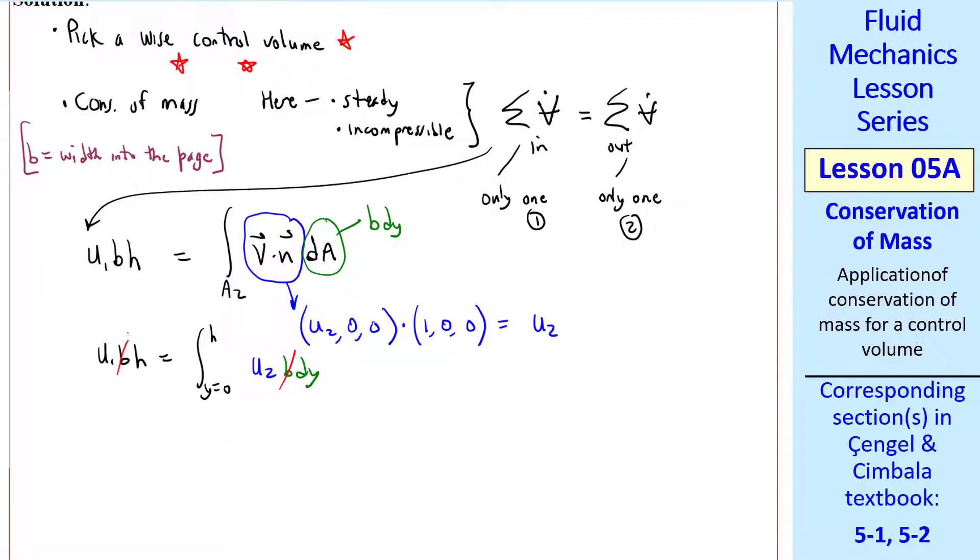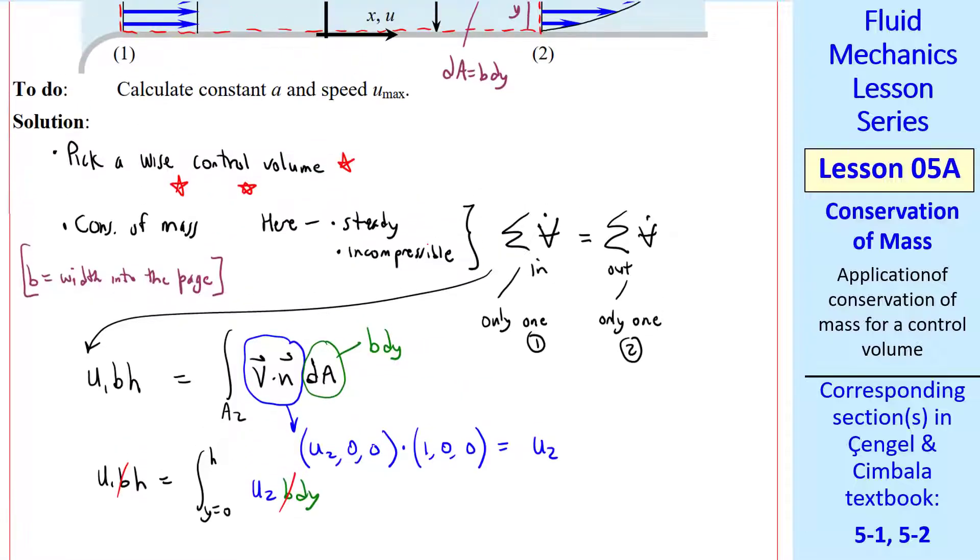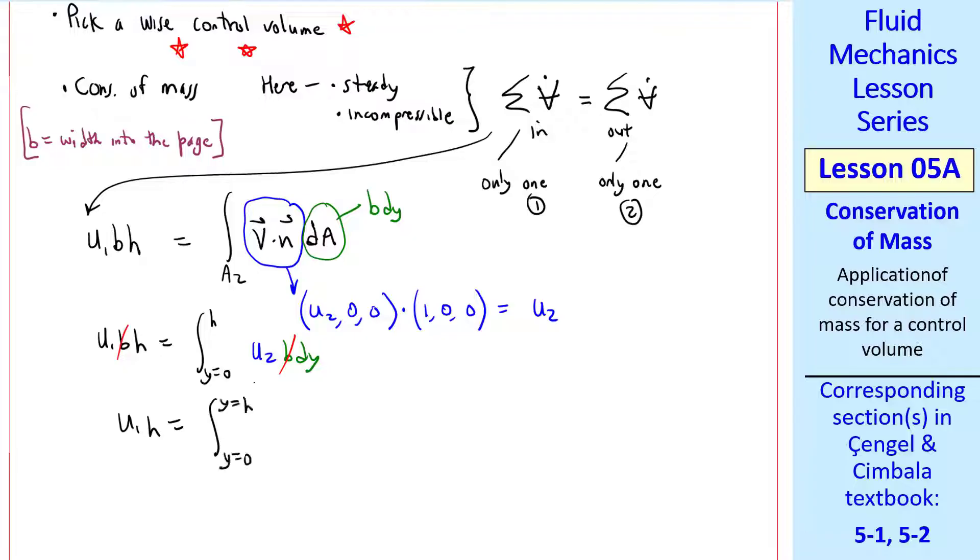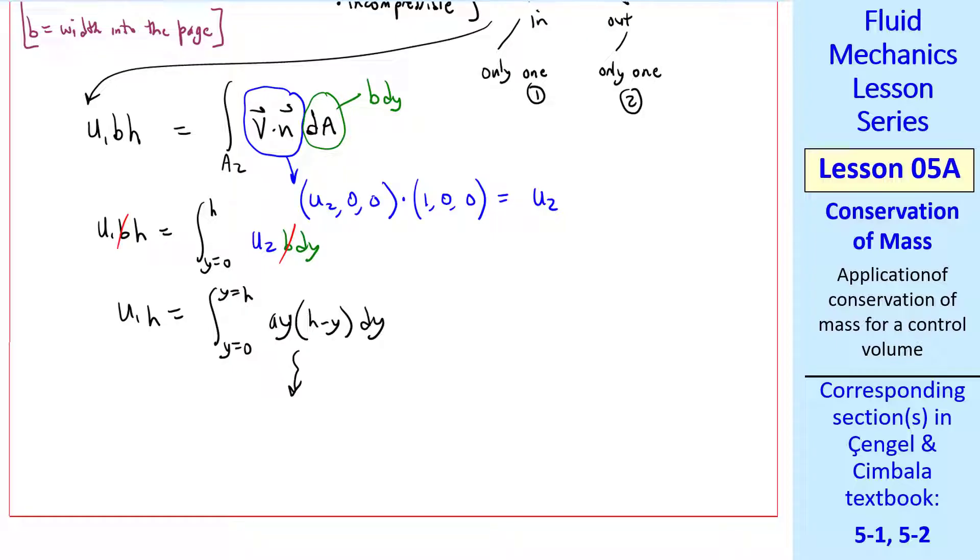Well, B is just a constant, so it cancels on both sides. And we're given an expression for U2 at this location, too. So U1H equal the integral from Y equals 0 to H, AYH minus Y, dy. You can integrate this and substitute in two limits. Do that on your own for practice. You should get U1H equal AH cubed over 6.